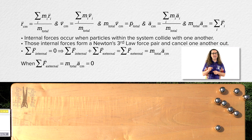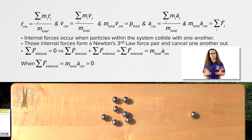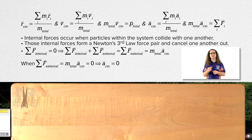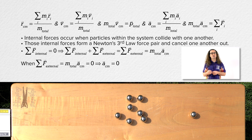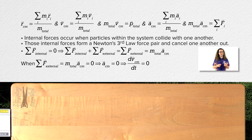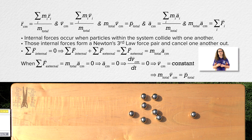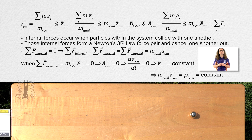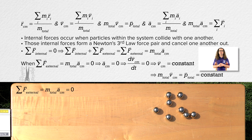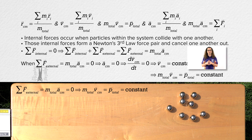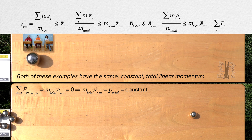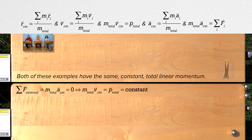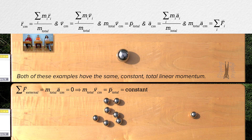Therefore, when the net external force acting on a system equals zero, as it does in this example, the acceleration of the center of mass of the system equals zero. Therefore, the velocity of the center of mass of the system will remain constant, and the linear momentum of the system will also remain constant. When you look at this example, you can see there are collisions occurring between particles in the system; however, there is no net external force acting on the system. Therefore, the system continues moving with a constant linear momentum, and that linear momentum is the same as the linear momentum of a single particle with a mass equal to the total mass of the system moving at the velocity of the center of mass of the system.